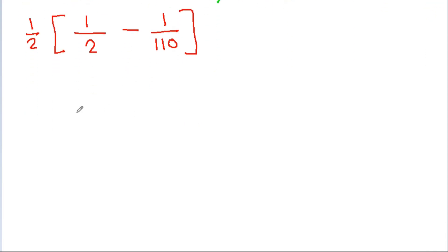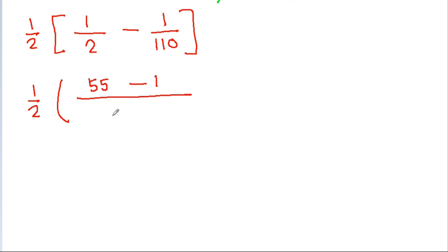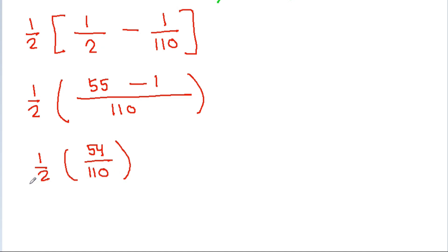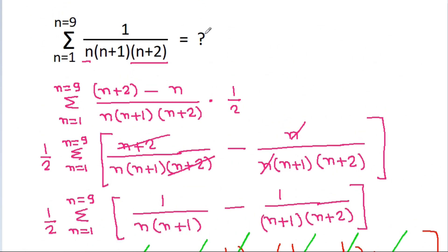This equals 1/2 times (55/110 minus 1/110), which is 1/2 times 54/110. Since 54 equals 2 times 27, this simplifies to 27/110. So the final answer is 27/110.